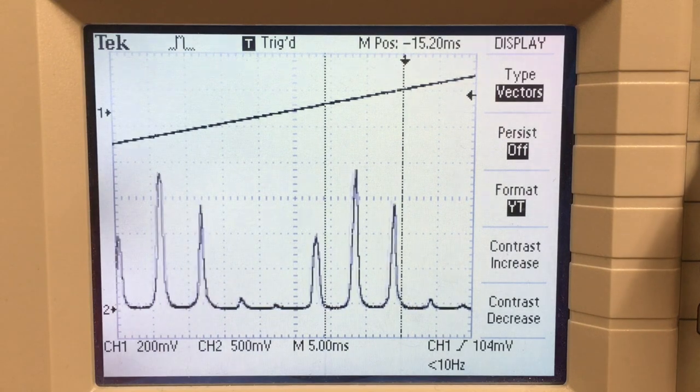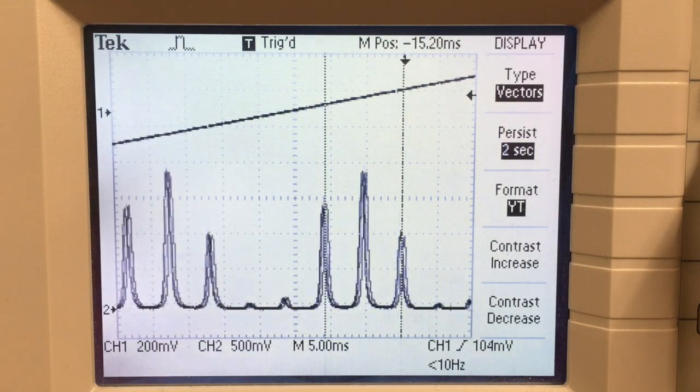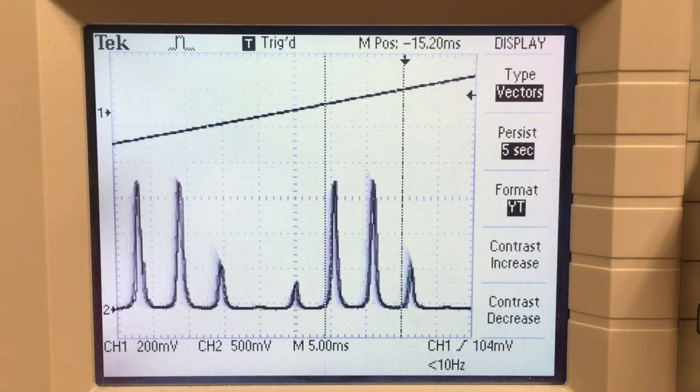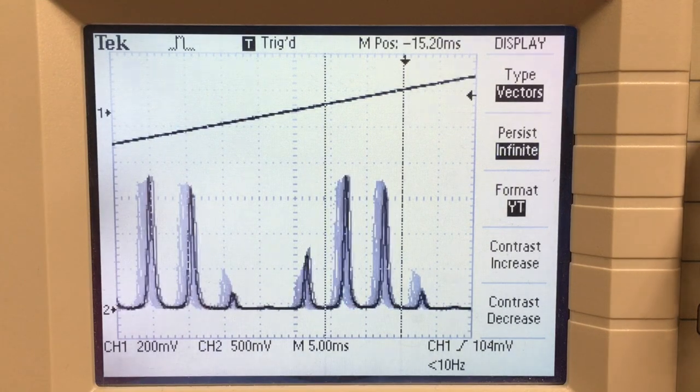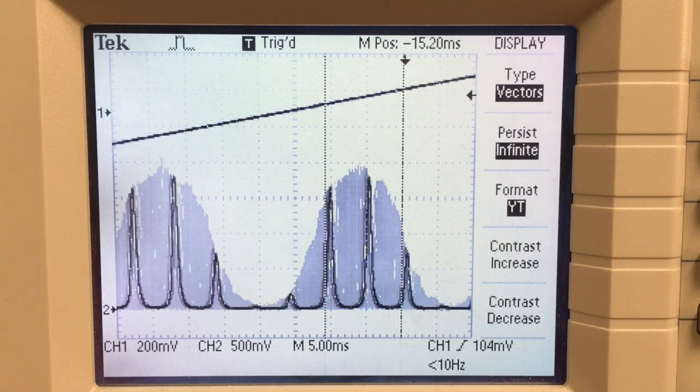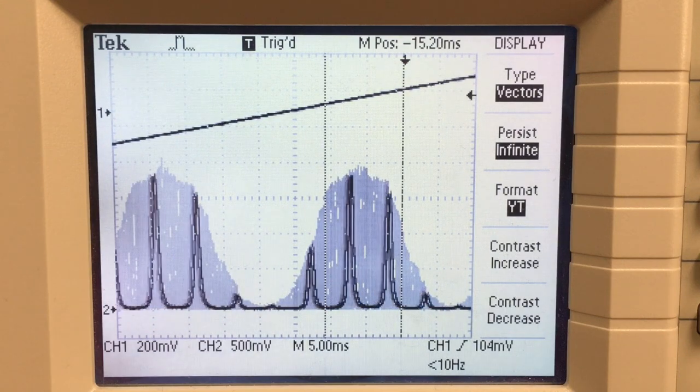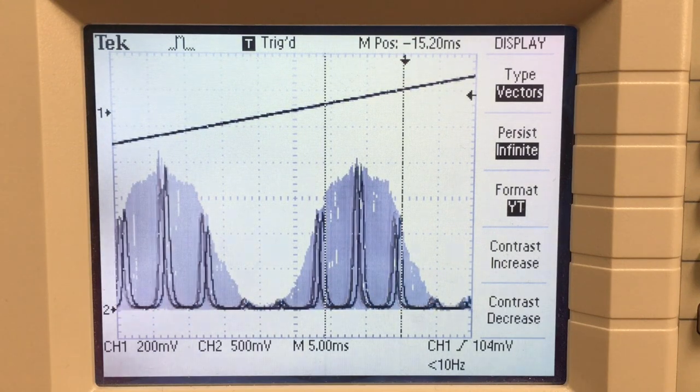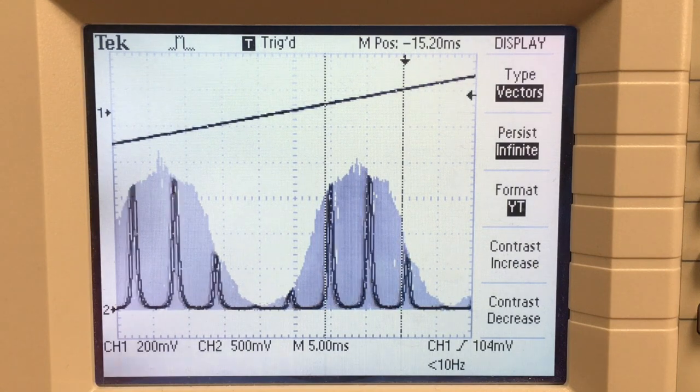Now I can also adjust the memory of the scope so that as it draws these traces, they stay darkened as the peaks scan along. And that makes the envelope, the overall envelope, a little easier to see.